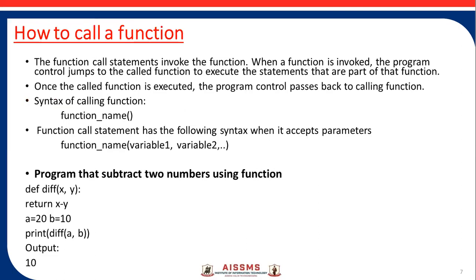How to call a function? A function call statement invokes the function. When a function is invoked, the program control jumps to the called function to execute the statements that are part of the function. Once the called function is executed, the program control passes back to the calling function. The syntax of a function call is: function name and parentheses. When it accepts parameters: function name, then variable 1, variable 2.